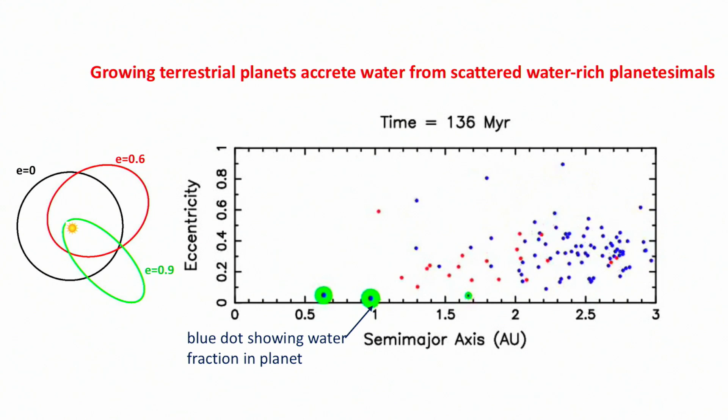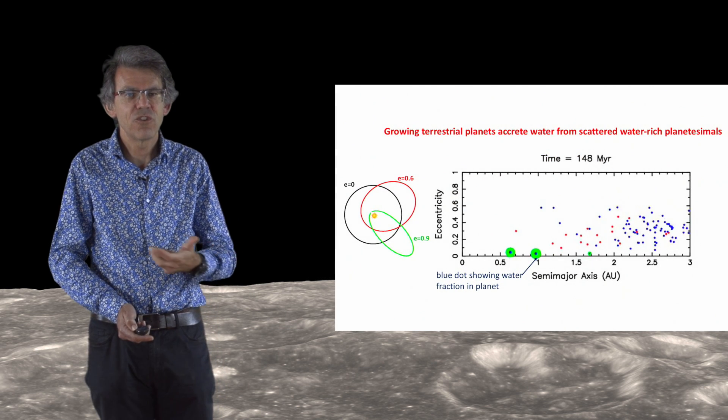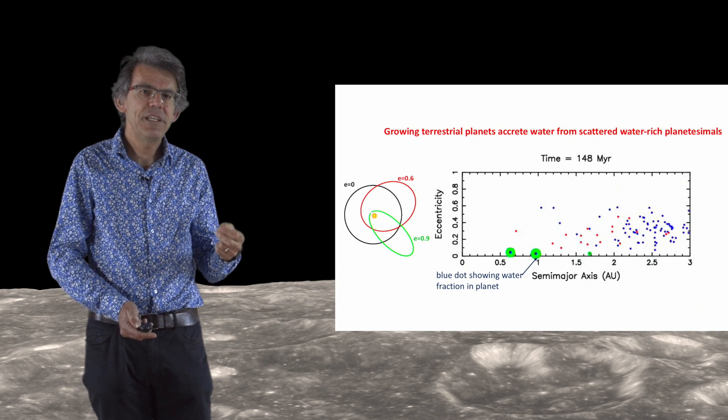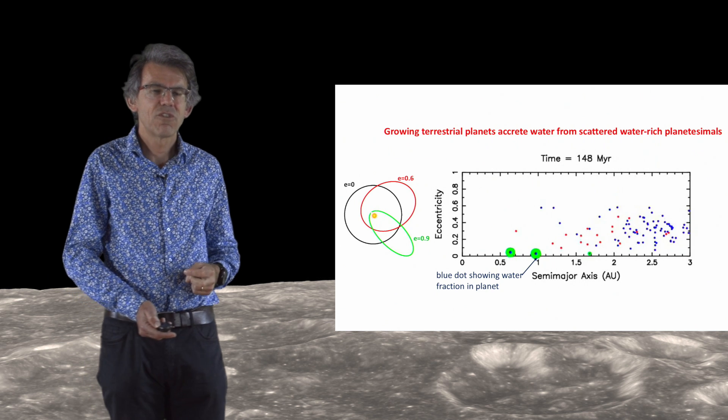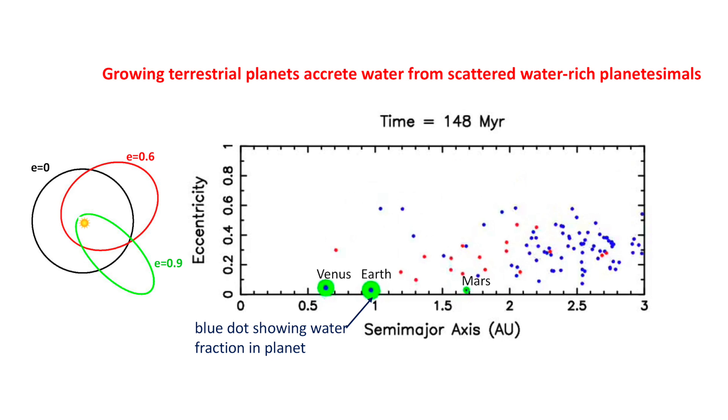So as the animation is running, we see that the embryos rapidly collide with each other, forming two major planets, and then there is a stranded embryo further out at about 1.5 AU. So these three planets that this simulation produces correspond quite well to Venus, Earth, and Mars. And the blue dot at the center of each planet shows which fraction of the mass of the planet has been accreted from this water-rich planetesimals scattered in by Jupiter. And we see that not only the Earth, but every terrestrial planet should have accreted a comparable budget of water. And this water is accreted during the growth of the planet, not just at the end, once the planets were fully formed.